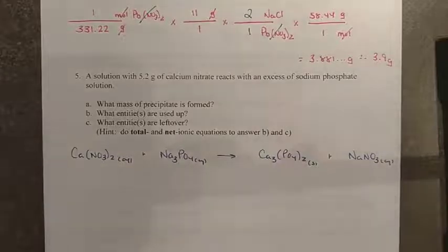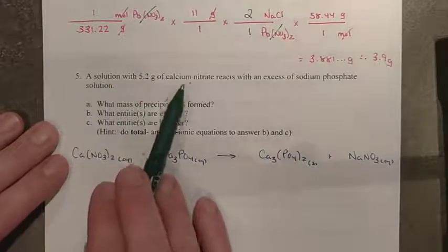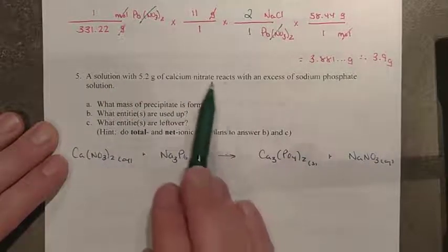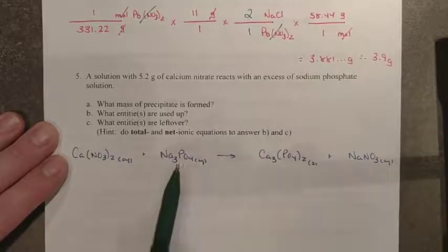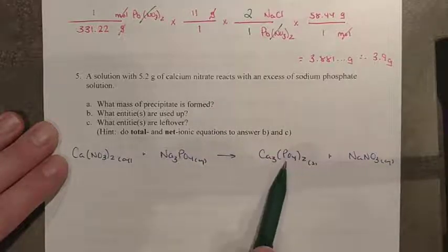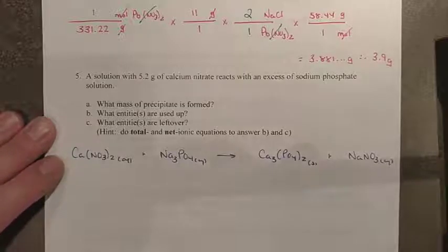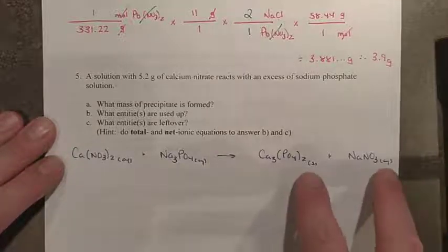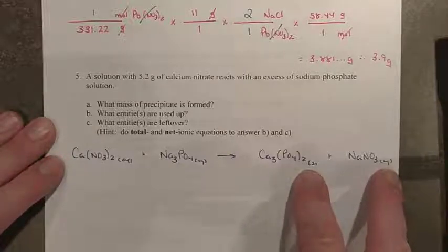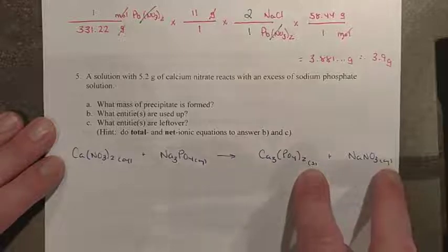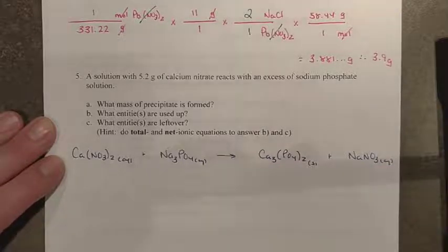Here we go. Let's take a look at one more, and we have a solution of calcium nitrate. There you go. Reacts with excess sodium phosphate. There you are, producing calcium phosphate and sodium nitrate. I've already done my solubility chart to find their states, and I can see that calcium phosphate is my precipitate.